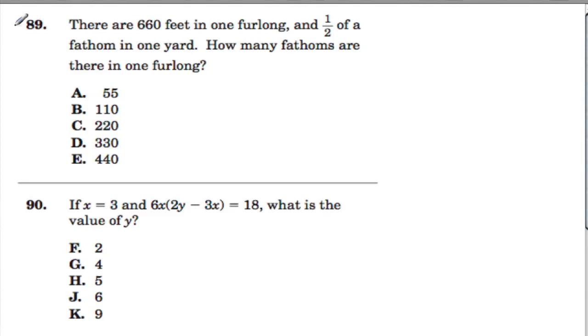In this problem we're given relationships between distances. 660 feet, I'll label my units here, in one furlong. So that means 660 feet equal one furlong.